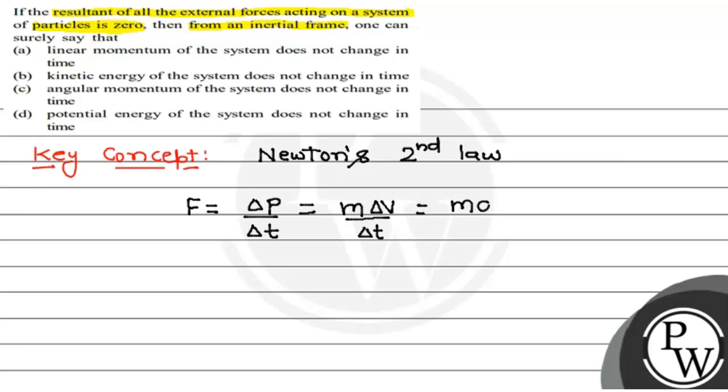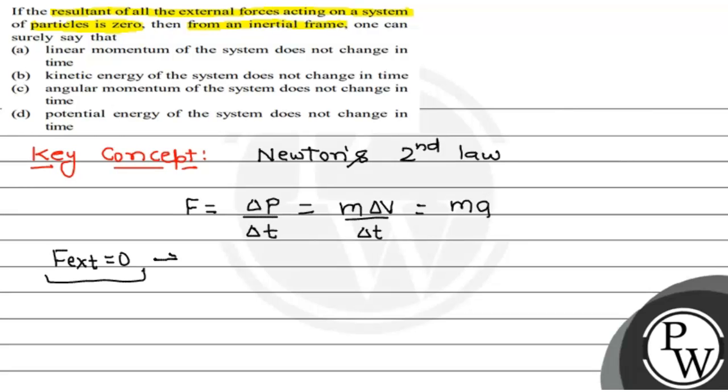If external force is equal to zero, then I can say delta p will be zero. Then we can say that momentum will not change with time. So, option A is correct.